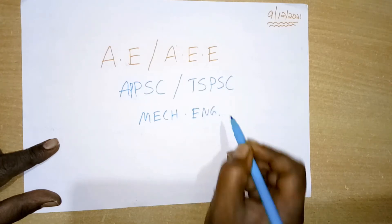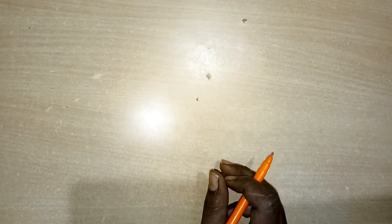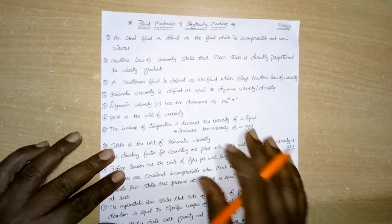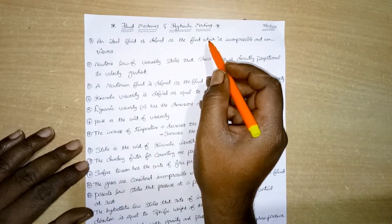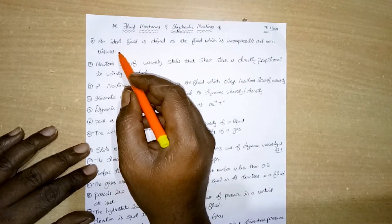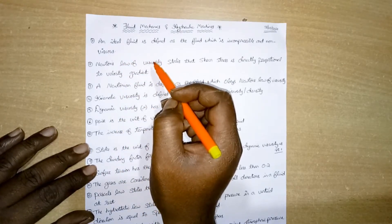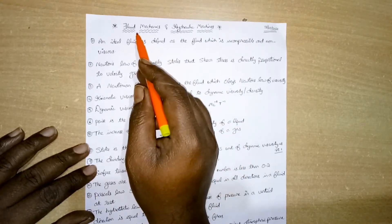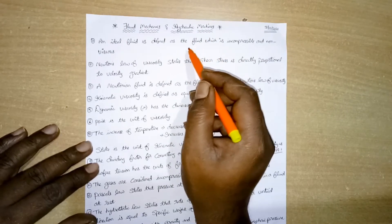Let us start today's class. I have prepared material for Assistant Engineer and Assistant Executive Engineer. Today's subject is Fluid Mechanics and Hydraulic Machinery. This material will be helpful for the bits you are going to get in your examination.